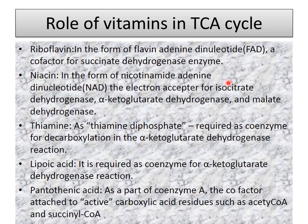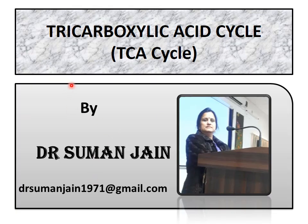Role of vitamins in TCA cycle: riboflavin, as FAD, is used by succinate dehydrogenase; niacin, as NAD+, is used three times — by isocitrate dehydrogenase, alpha-ketoglutarate dehydrogenase, and malate dehydrogenase; thiamine, as thiamine diphosphate, is a coenzyme for alpha-ketoglutarate dehydrogenase; lipoic acid is a coenzyme for alpha-ketoglutarate dehydrogenase; pantothenic acid is the coenzyme and cofactor attached to active carboxylic acid residues such as acetyl coenzyme A and succinyl coenzyme A — coenzyme A being the active form of pantothenic acid, which is vitamin B5. Thank you very much for listening.